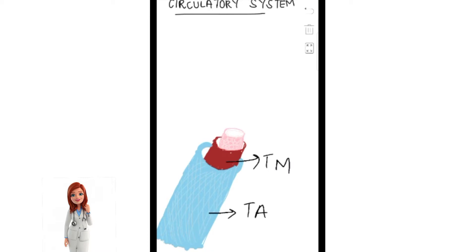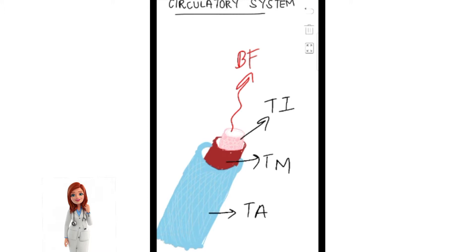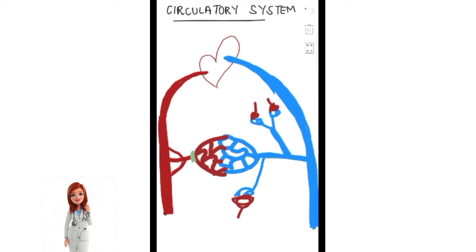The middle layer is red in color because it is made up of muscles. The innermost layer is known as the tunica intima — intima means innermost. This is the layer where the lumen is, where blood flows. It is lined with epithelium and a little bit of connective tissue.